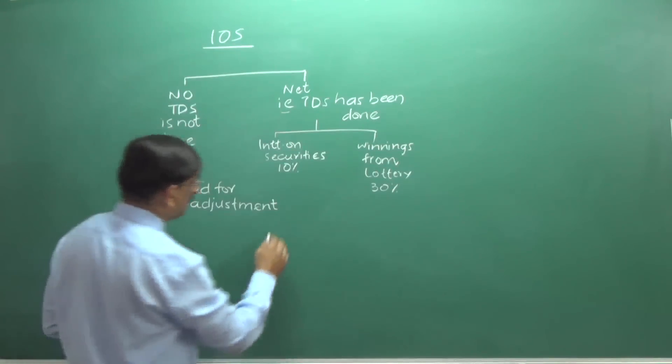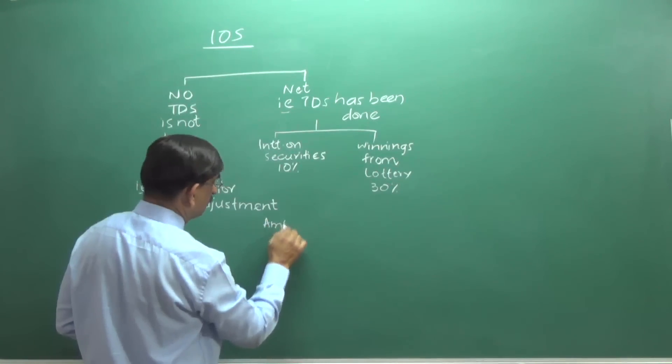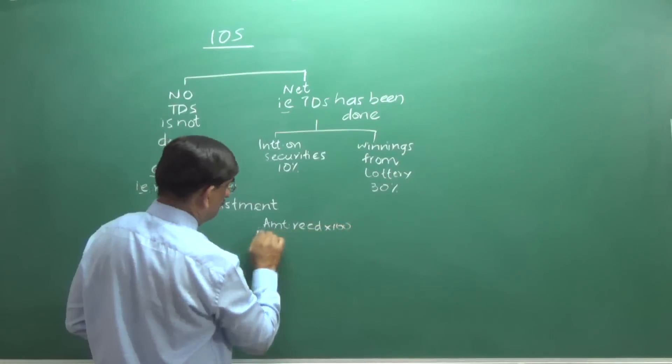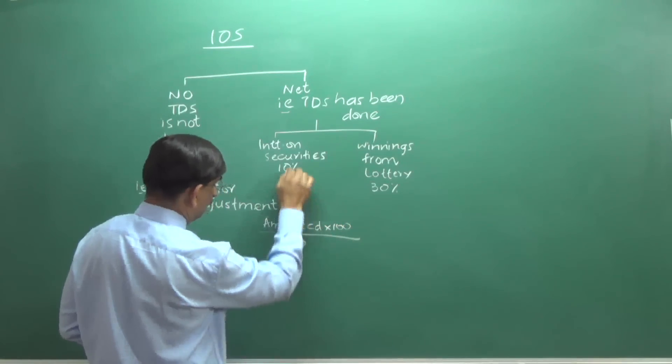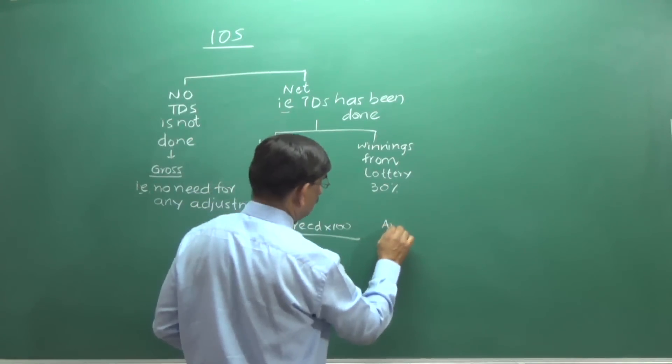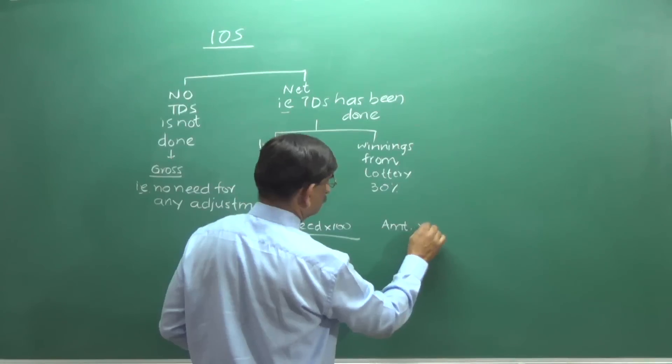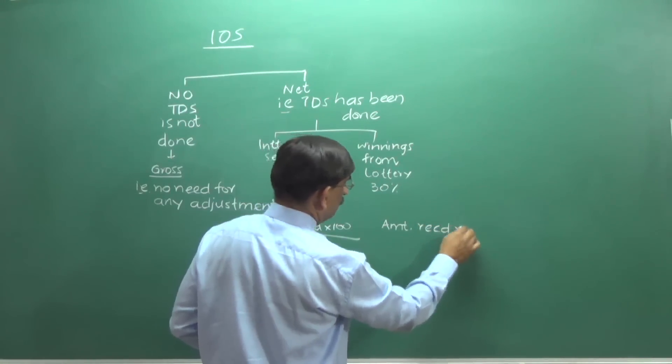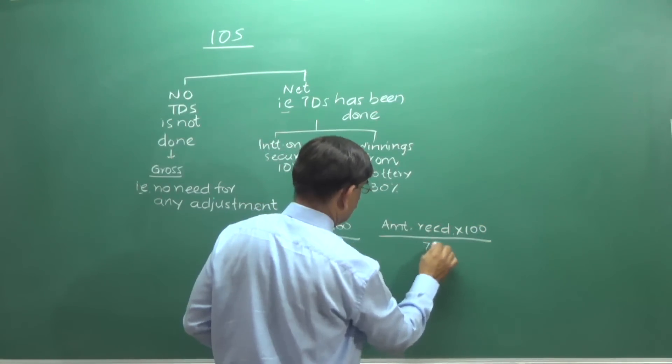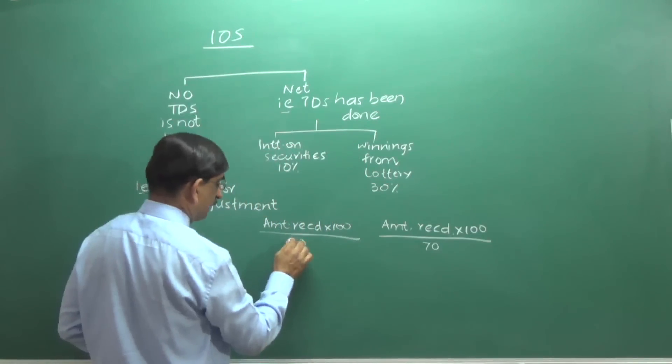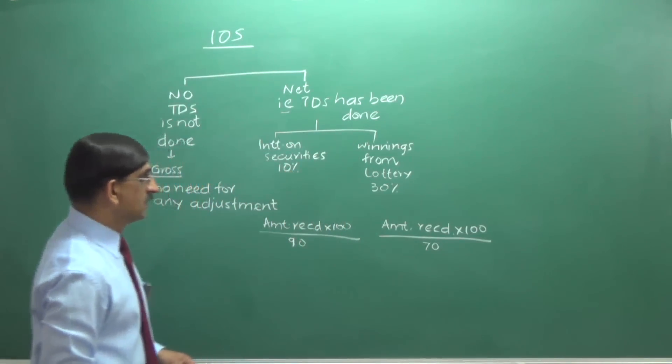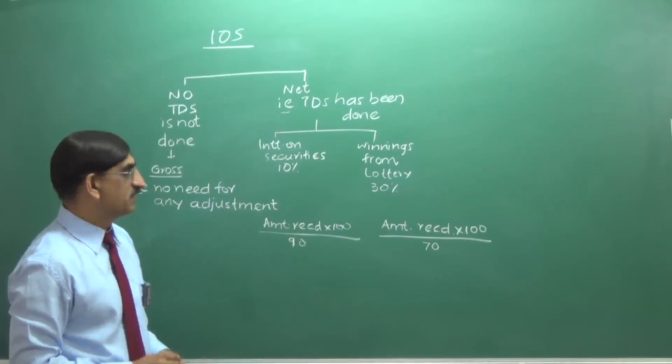The formula for grossing up is amount received into 100 divided by 10. 10 TDS is what has been done. In case of winnings from lotteries, amount received into 100 divided by 70. Here it is 90. Here it is 90. TDS from 100, we deduct 10. So, this is 90. So, this is the grossing up formula we'll have to use.